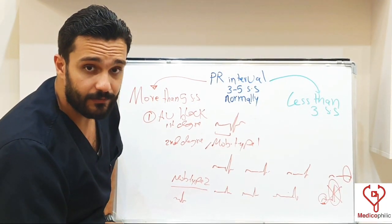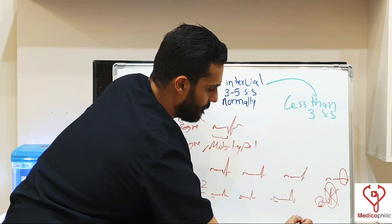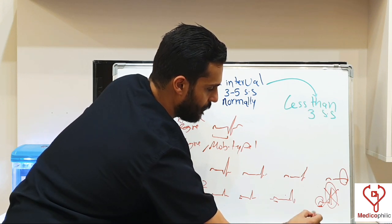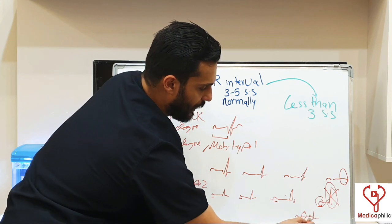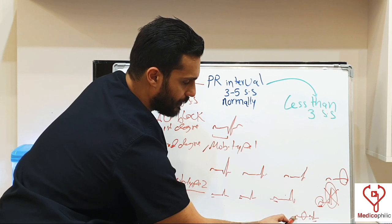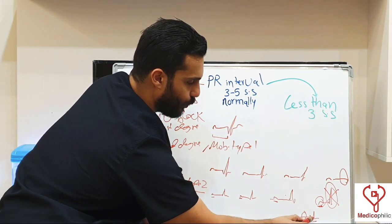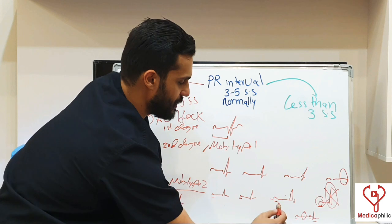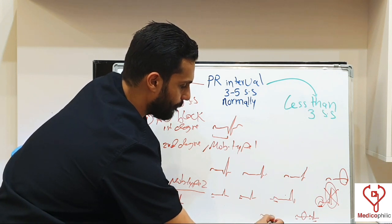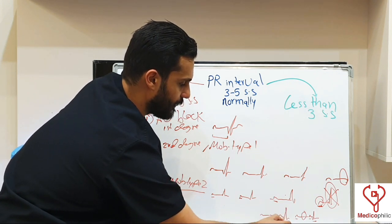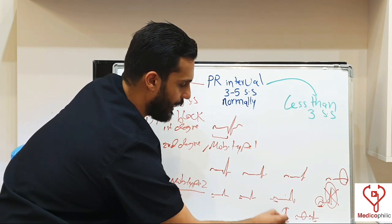You can count the number of P waves before the QRS. If there is one P wave with no QRS and then one P wave with a QRS, that is called two-to-one AV block — two P waves for one QRS. And you may see three P waves before the QRS, which is called three-to-one AV block.